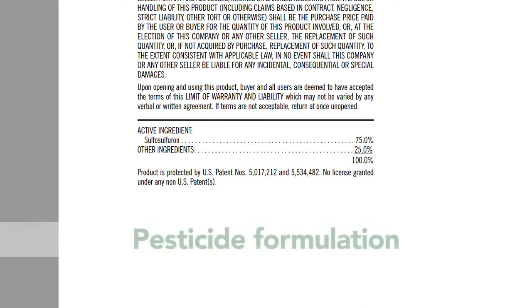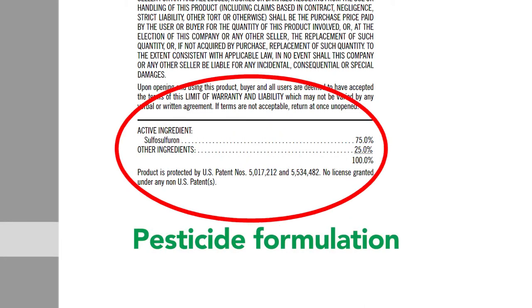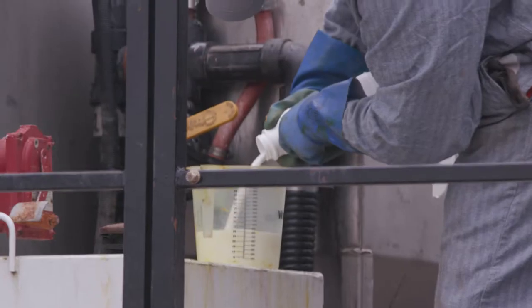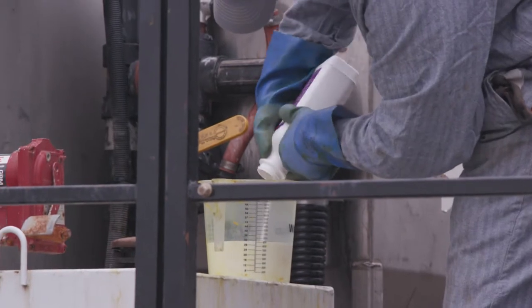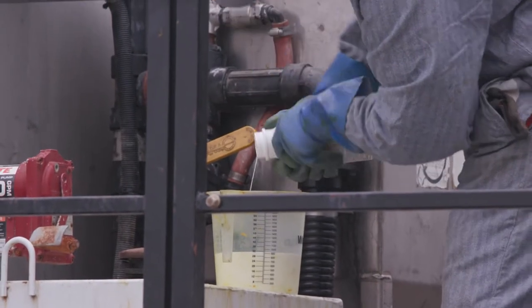The pesticide formulation is the mix of active and other ingredients in the product. There are many types of formulations, but pesticides are usually in a liquid, dry, or gas form.